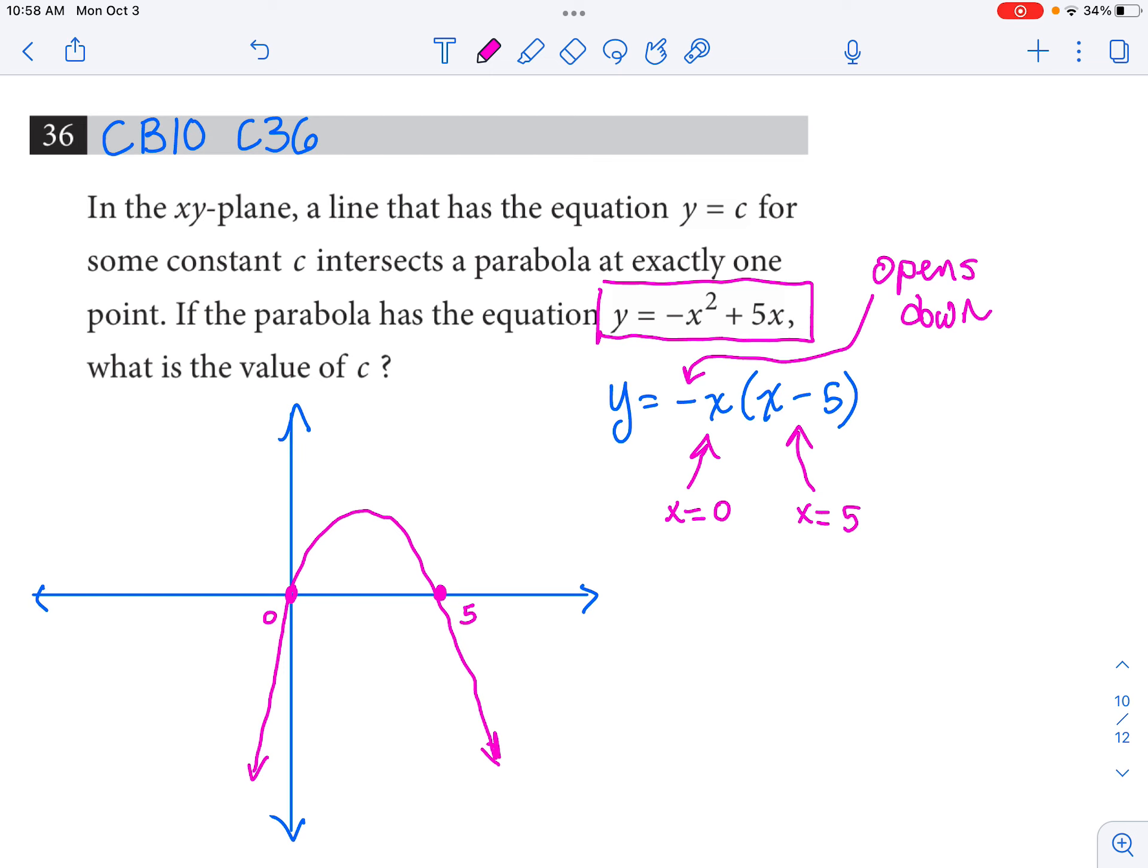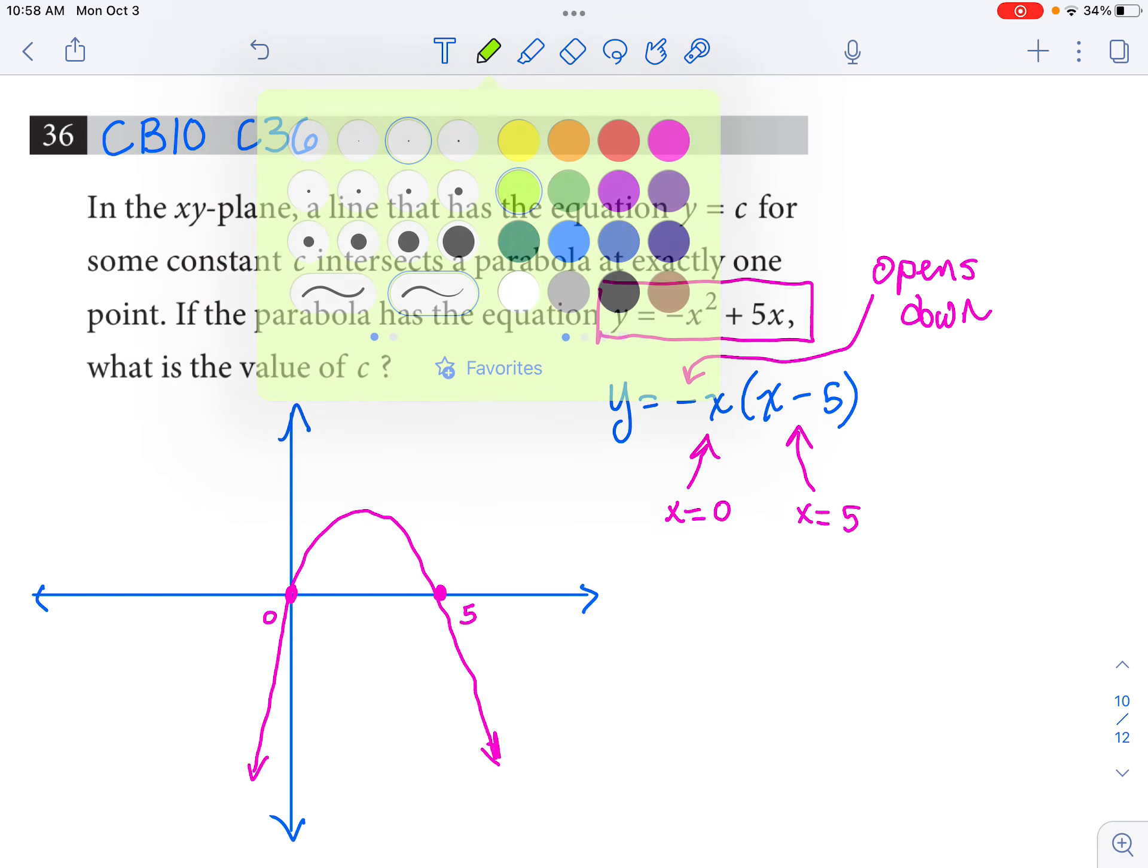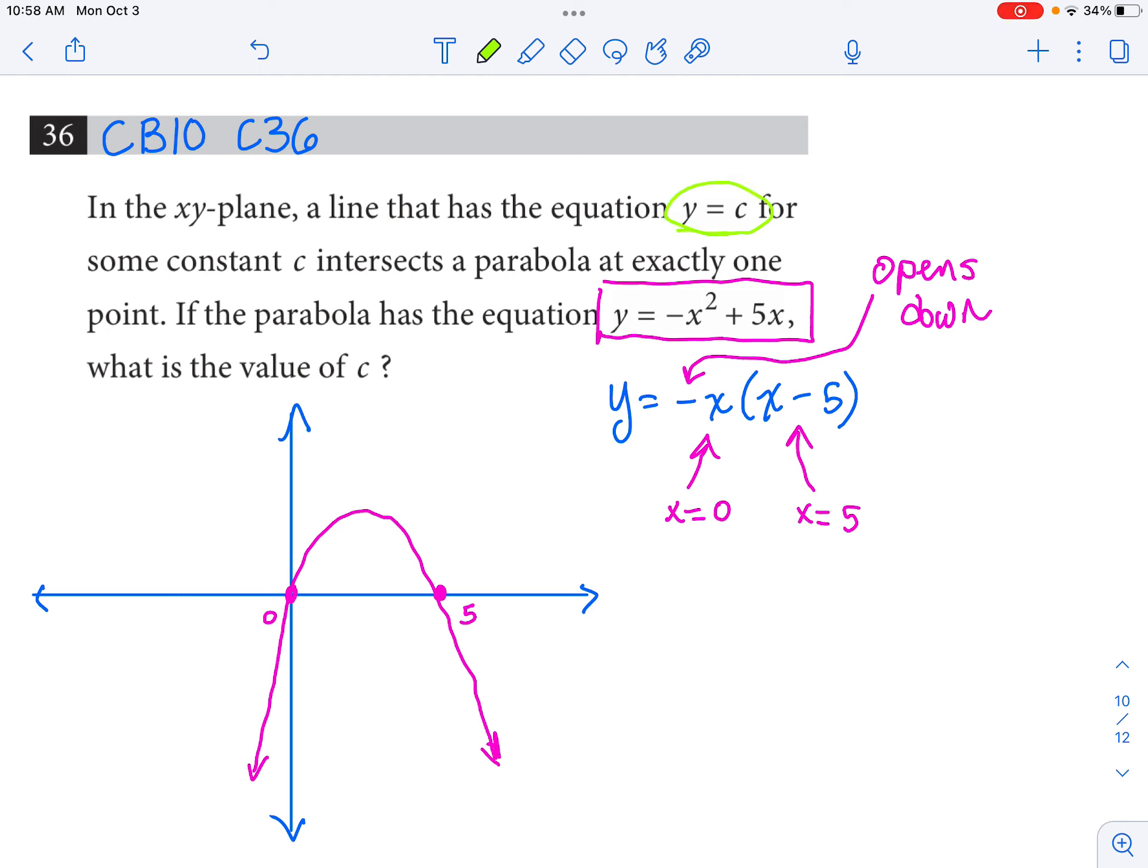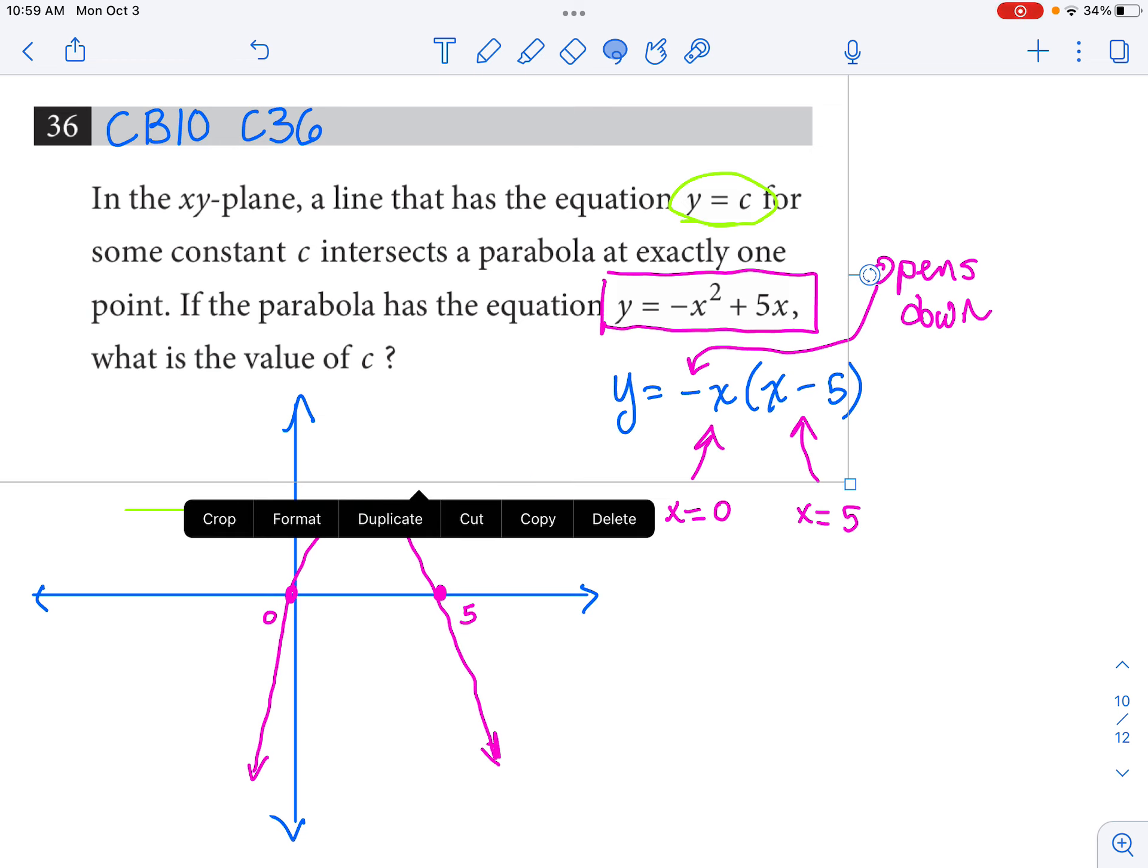Now they're talking about some line y equals c. Let me change colors here. Some y equals c. They say it's intersecting the parabola exactly once. It's a horizontal line. I think this is a really long-winded way of them asking for the vertex of this parabola, because I think that what's happening here is this horizontal line is a line that hits the parabola exactly once at its vertex.